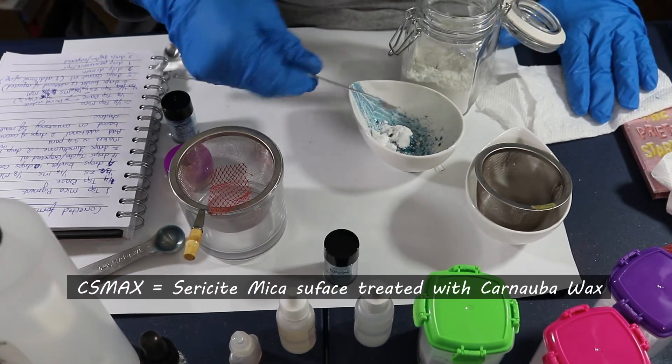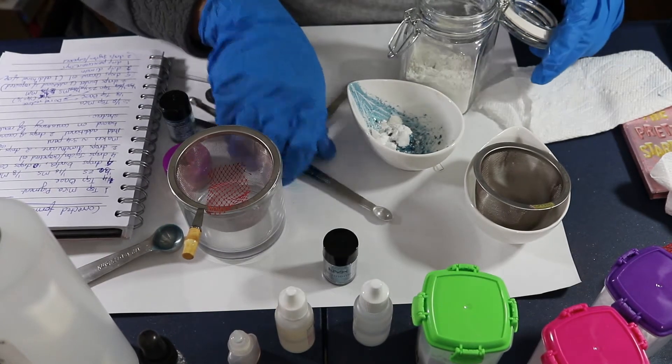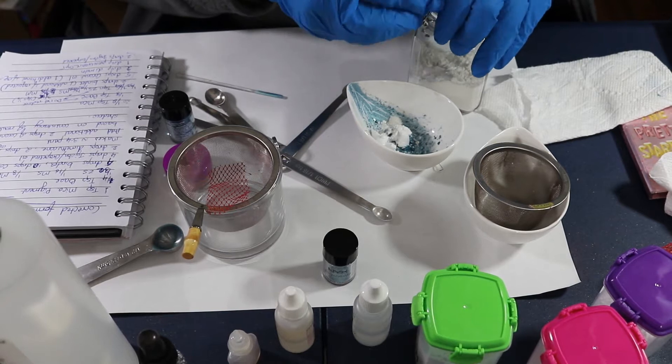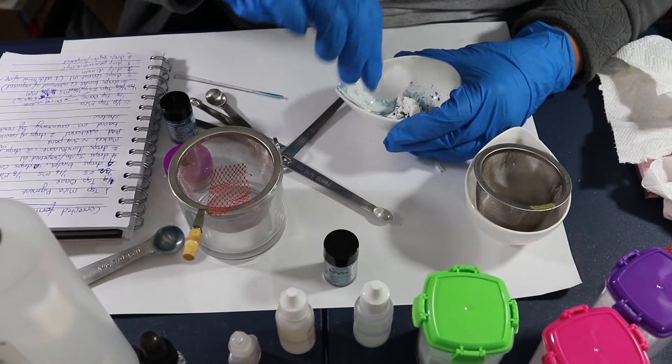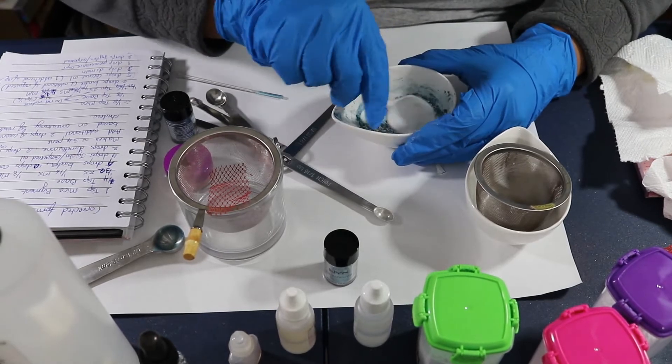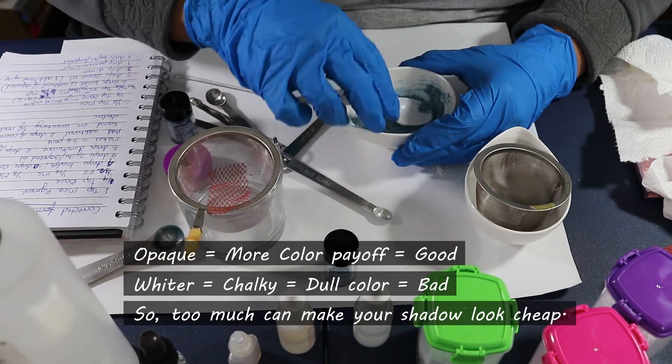Now CS Max has that carnauba wax which is supposed to give you additional adhesion. At the same time it's supposed to make your shadows feel more creamy, but the thing with Ceresite Mica is that it also makes your shadows opaque and kind of whiter. So let's mix this up.